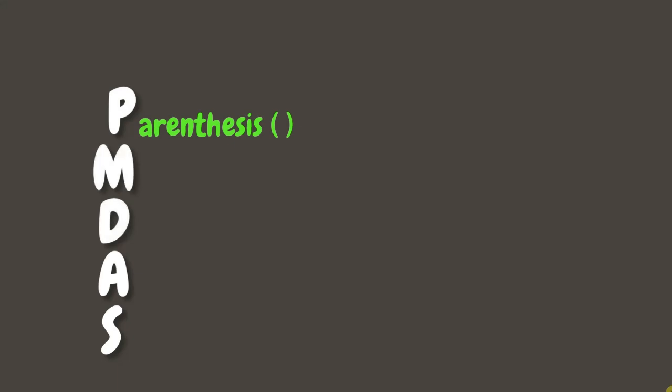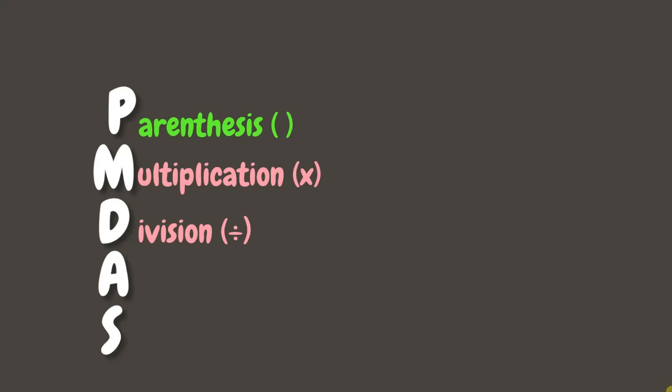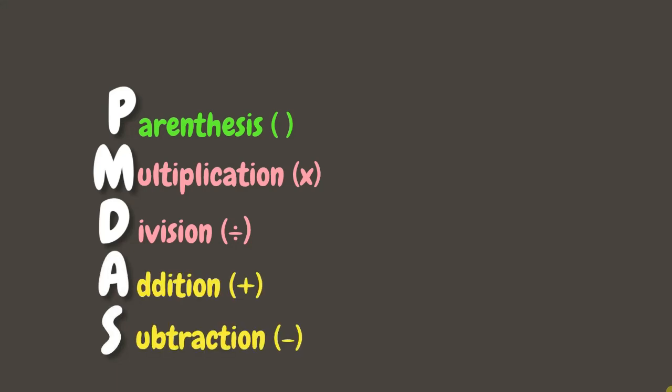M and D stand for multiplication and division. Multiplication and division have equal priority, which means you solve whichever comes first from left to right. If multiplication comes before division, you multiply first; if division comes before multiplication, you divide first. A and S stand for addition and subtraction. Like multiplication and division, they also have equal priority — solve whichever comes first from left to right.